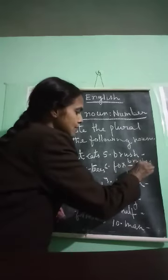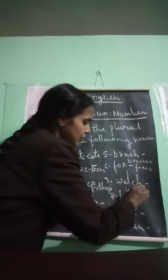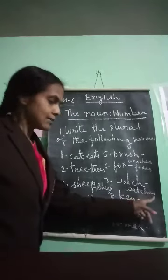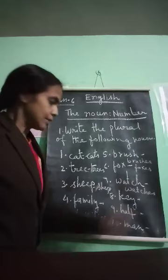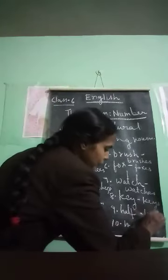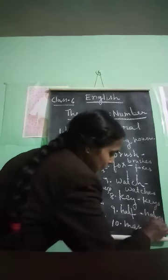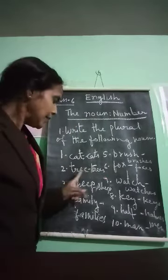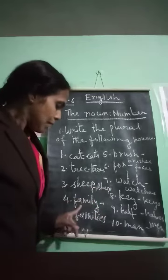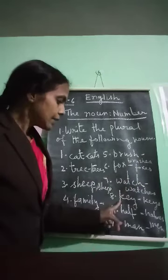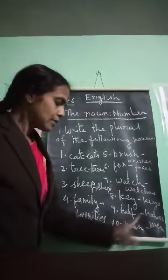Fox → foxes. Watch → watches, because it ends in -ch, so you add -es. Key → keys, just add -s. Half → halves. Men → men. Let's review: cat/cats, tree/trees, sheep/sheep, family/families, brush/brushes, fox/foxes, watch/watches, key/keys, half/halves, men/men.